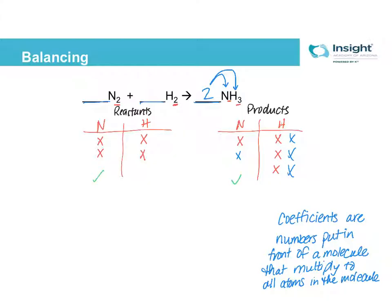Now I need to work on my hydrogens. I have 6 on my product side but only 2 on my reactant side. 2 times 3 will give me 6, so I'm going to put a 3 in front of H₂. This 3 multiplies by that 2 to give me a total of 6 hydrogens, and now my hydrogens are balanced. Just know the end goal is that each different atom needs to have the same number on the reactant side as it does on the product side.